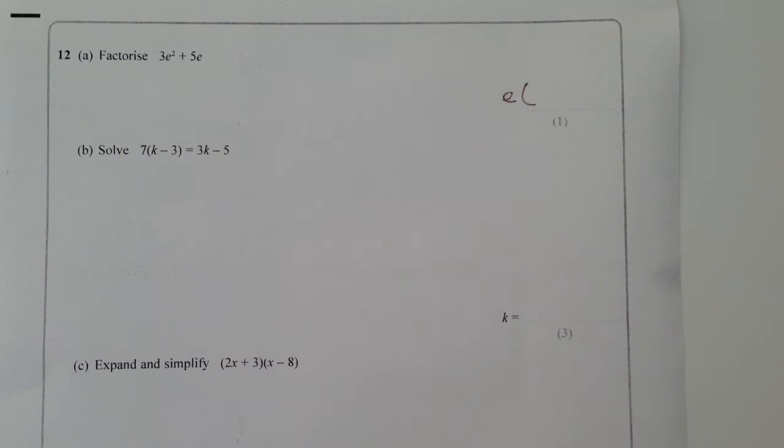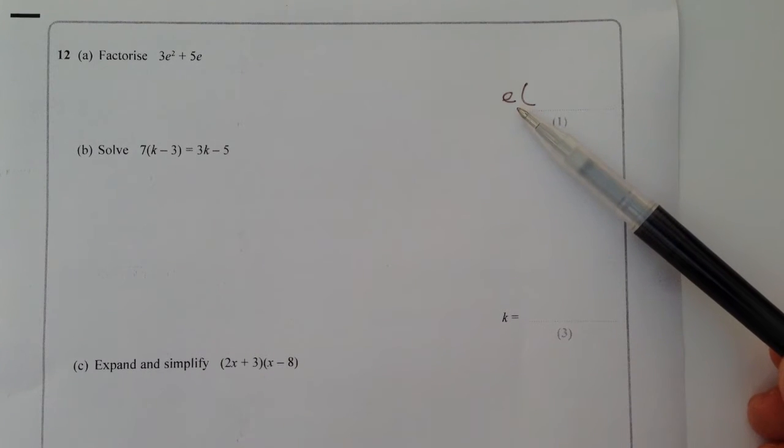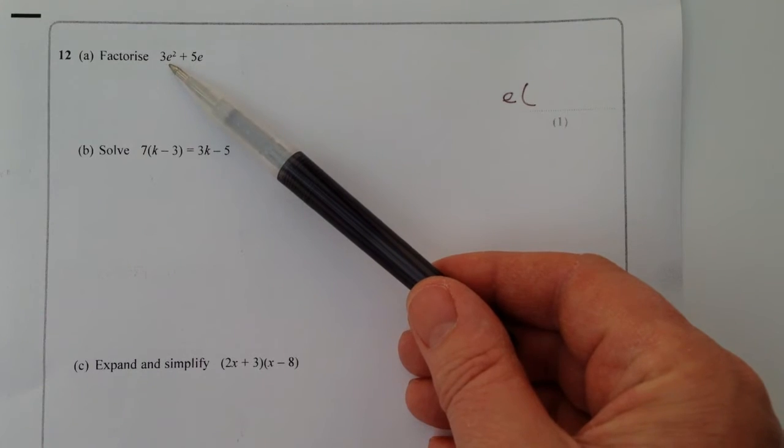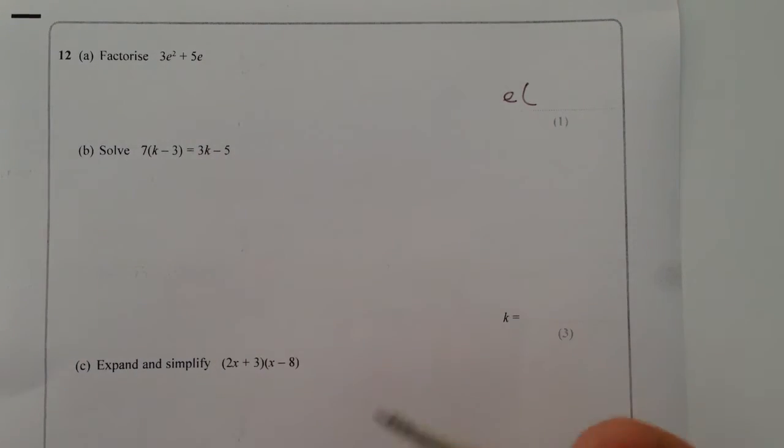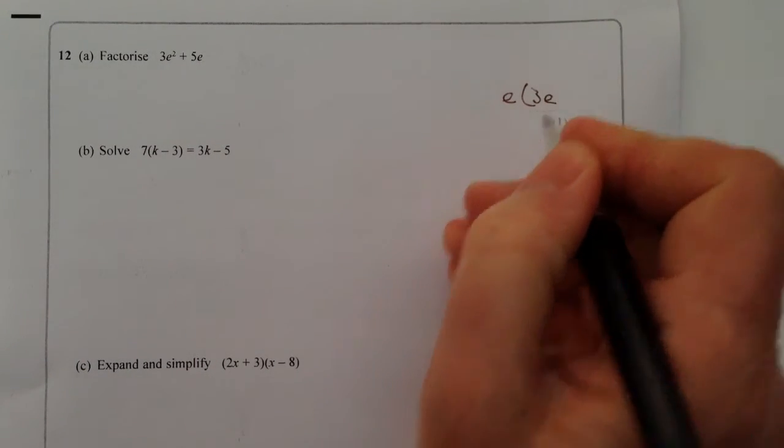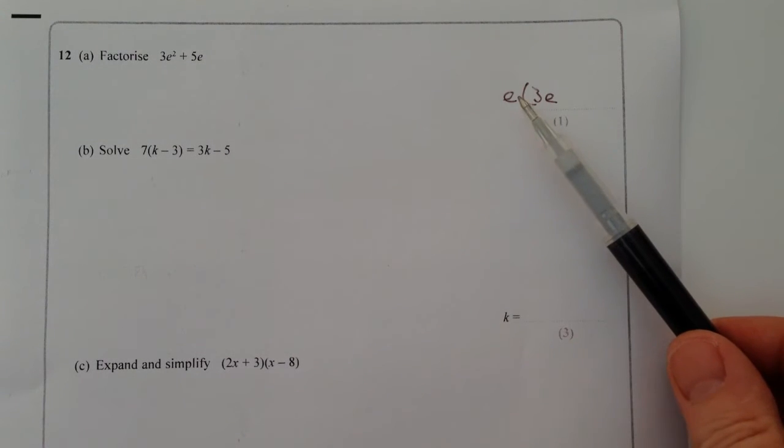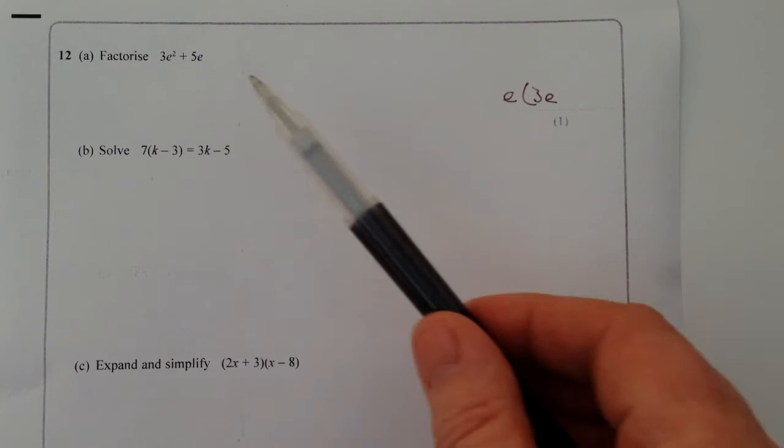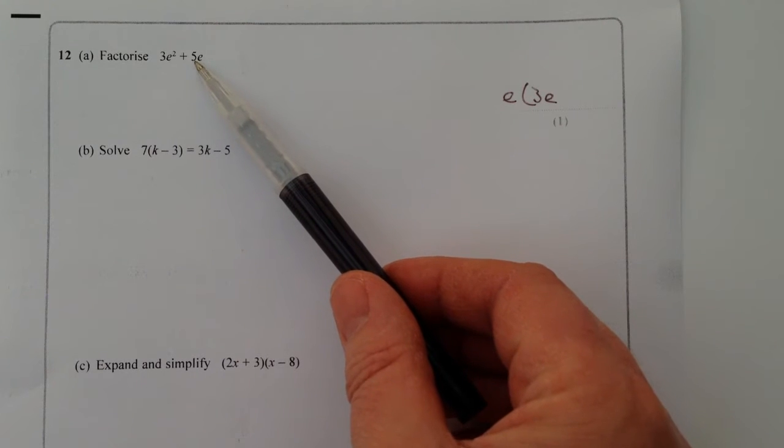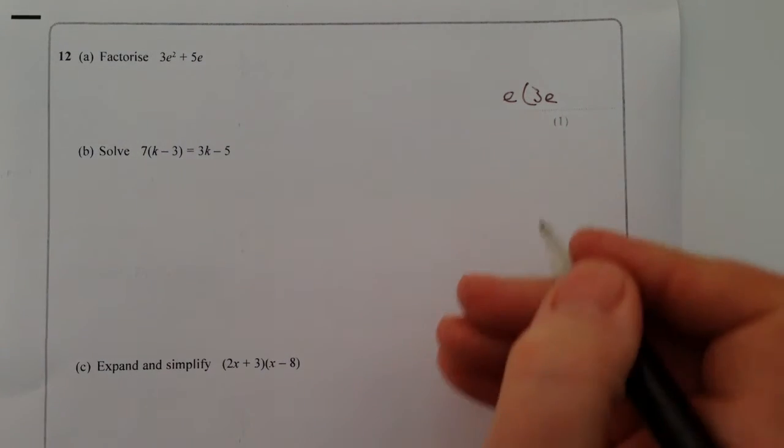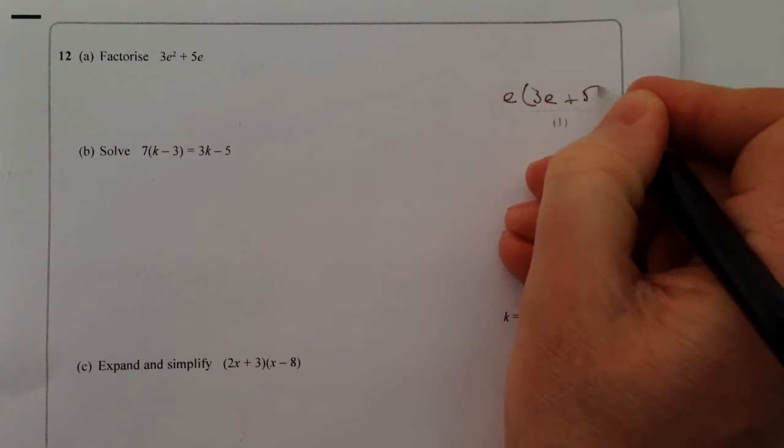When we do that then, we say, what have I got to multiply e by to get 3e squared? Well, that's going to be 3e. What can I multiply e by to get positive 5e? Well, that's going to be positive 5.